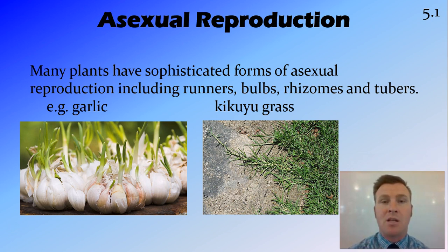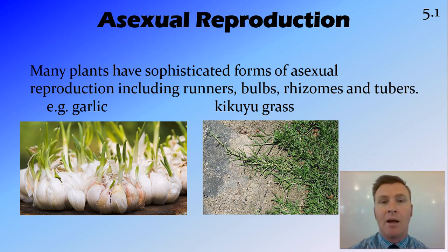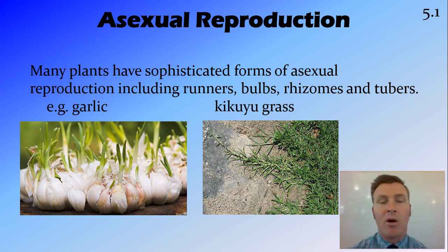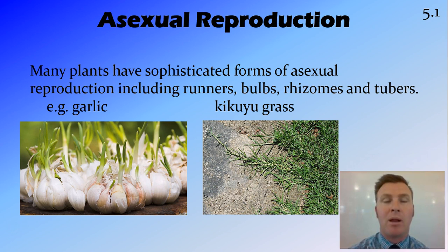Another plant asexual reproduction method is bulbs. Garlic, for example — when you get a bulb of garlic, each of those little cloves, if the process kept growing, would actually turn into another garlic plant and then could be replanted to create another bulb in itself.